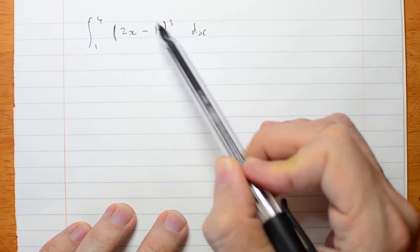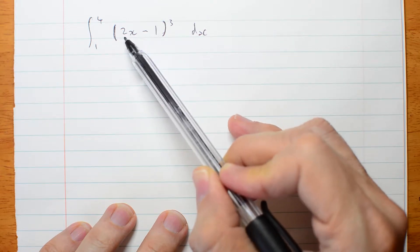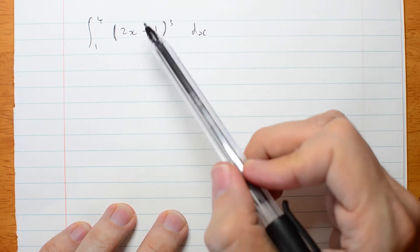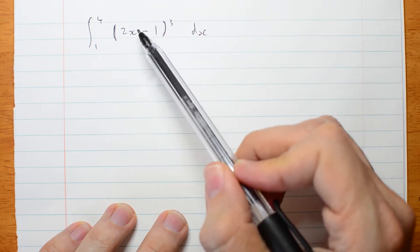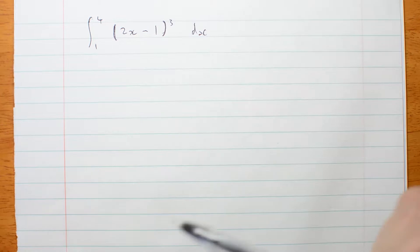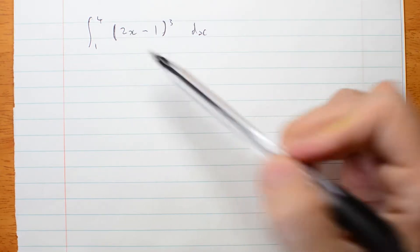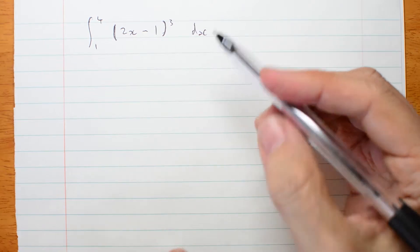The derivative of this thing inside is just 2, which is a constant. So again, all we're going to have to do, like a couple of the other examples, is if we were differentiating, we'd be multiplying by 2 for the derivative of the inside. Because we're integrating, we're going to be dividing by this 2. So let me show you.